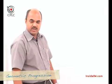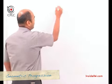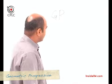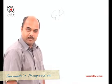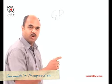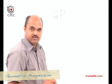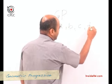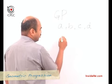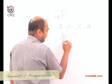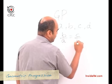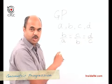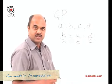Let's look at another kind of progression called geometric progression, or GP. The characteristic of a geometric progression is that the ratio of any two consecutive terms remains the same. So if A, B, C, and D are in geometric progression, then B upon A equals C upon B, which equals D upon C — the ratio between any two consecutive terms remains the same.